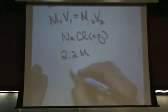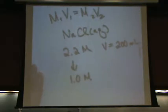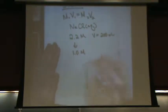I want to dilute this down to 1.0 molar. The initial volume is, let's say, 200 milliliters. So all you do is set it up. It doesn't matter which one's 1 and which one's 2, as long as you're consistent.